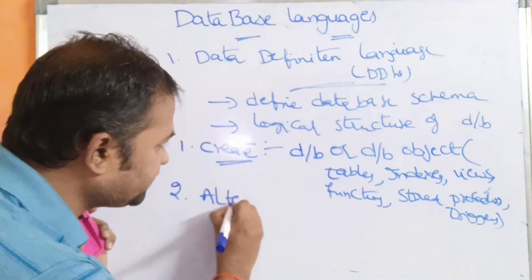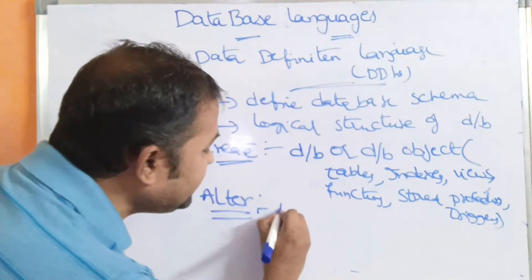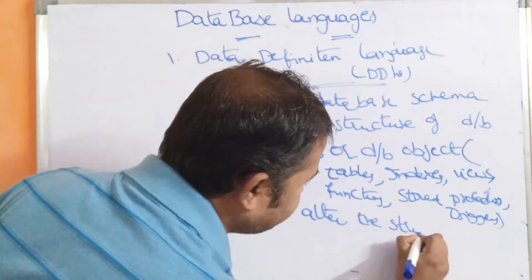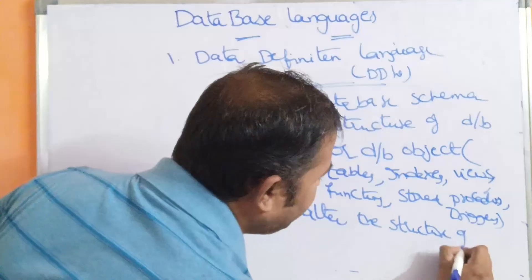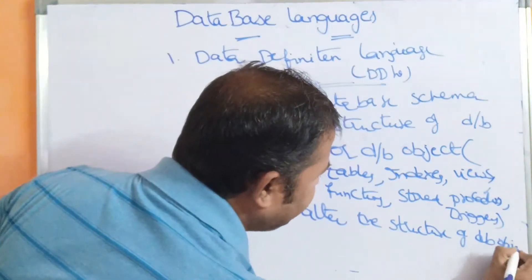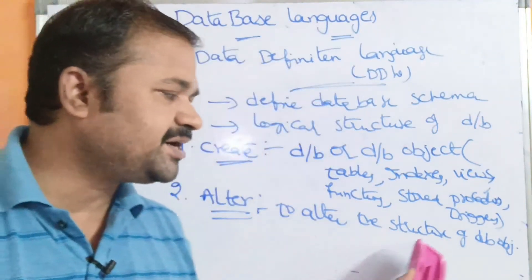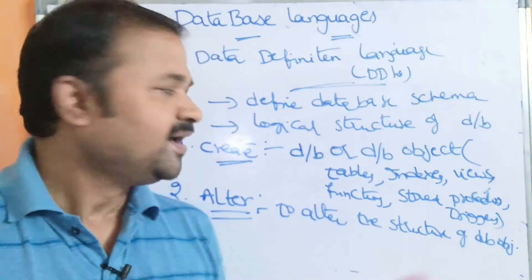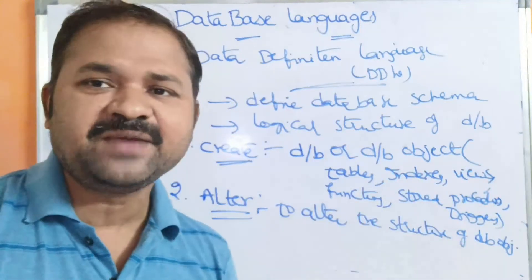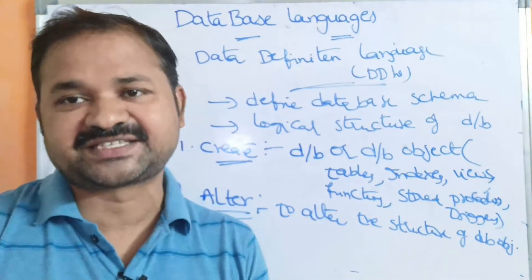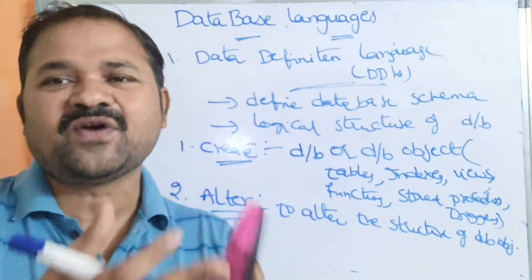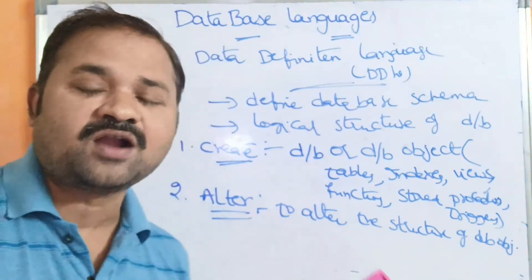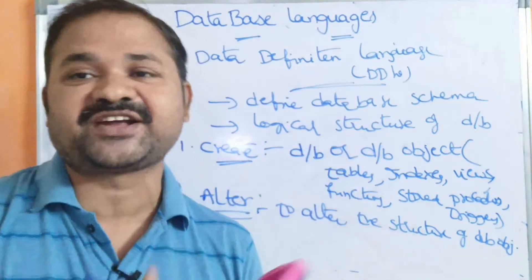The second DDL command is the ALTER command. It is mainly useful in order to alter the structure of a database object. For example, if a table is initially created with three columns and we want to add two more columns, that should be done with the help of the ALTER command to modify the existing structure.